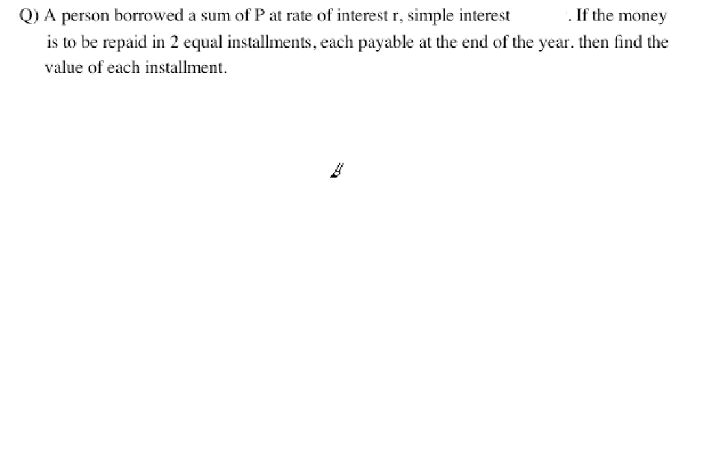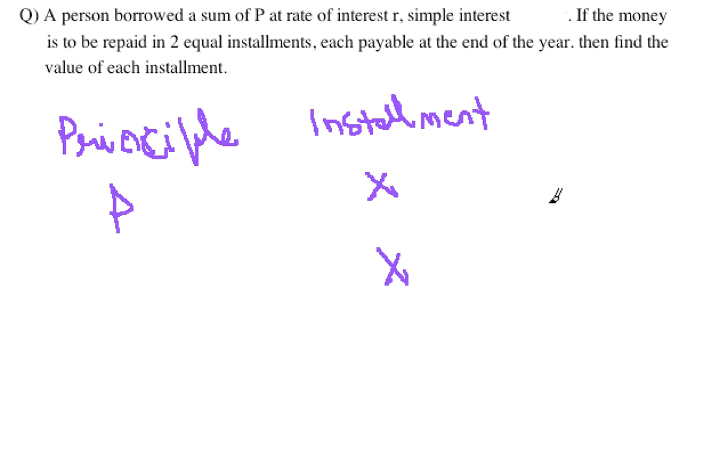How we do these kind of questions is we basically have a table here. We can draw a table such that the first column is the principle, which will be P for first year. Then we have installment, so we can assume both the equal installments to be equal to x for both time periods.